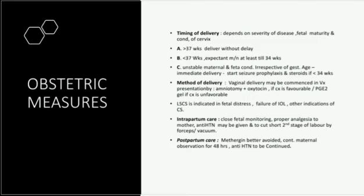Method of delivery: either induction or cesarean section. Induction and vaginal delivery may be commenced with amniotomy plus oxytocin drip if the cervix is favorable and Bishop score is good. If Bishop score is not favorable, cervical ripening with PGE2 gel is done first, then oxytocin and amniotomy. Cesarean section is indicated for failed induction and other standard indications. Intrapartum care: close fetal monitoring, proper analgesia, antihypertensives may be given, and cut short the second stage of labor by forceps or vacuum.